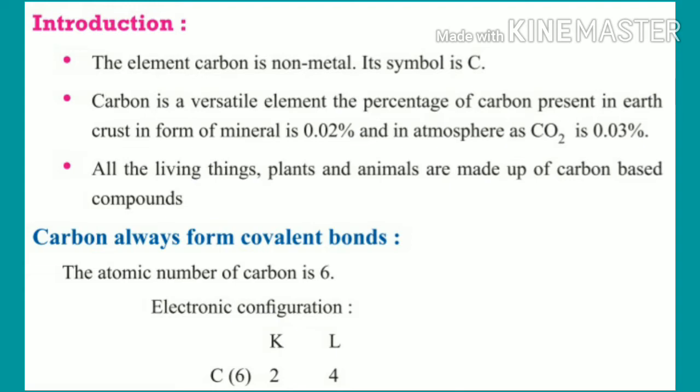The atomic number of carbon is 6. In the K-shell, 2 electrons fill up, and in the L-shell, out of 6, 2 are used — so the remaining 4 electrons fill the L-shell. So carbon has 4 electrons in its outermost shell.